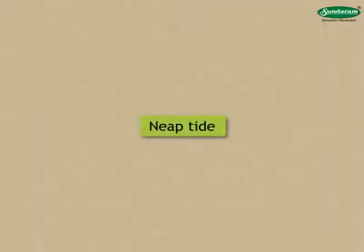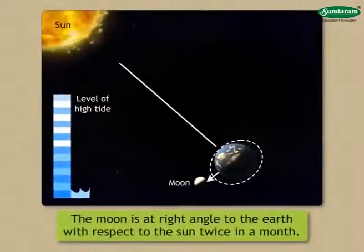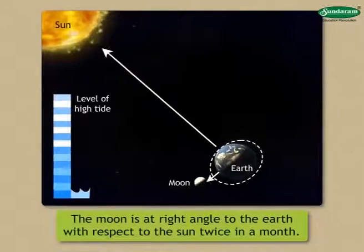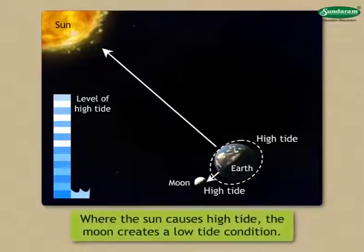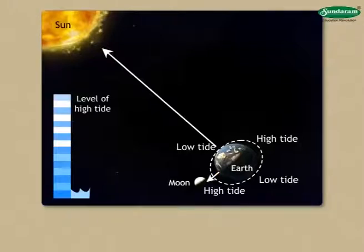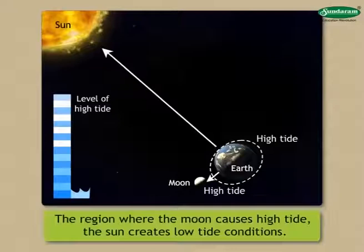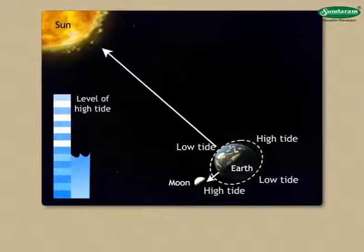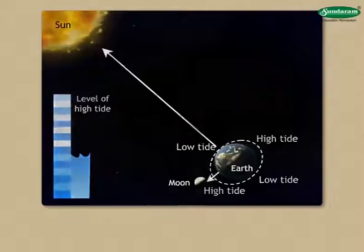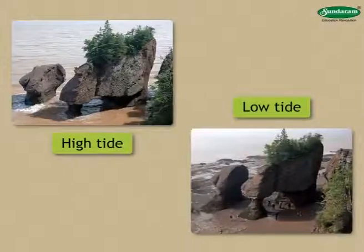The second type is neap tide. While revolving around the earth, the moon is at a right angle to the earth with respect to the sun twice in a month. This situation is observed on quarter moon days. On these two days, the tide-generating forces of the moon and the sun operate in different directions. The region where the sun causes high tide, the moon creates a low tide condition, and vice versa. Therefore, during the high tide generated on these days, the water level has a lower rise and the low tides also fall to a lesser extent. This type of tide is called neap tide. Note that the difference in water level at high and low tides is greater in spring tide and lower in neap tide.